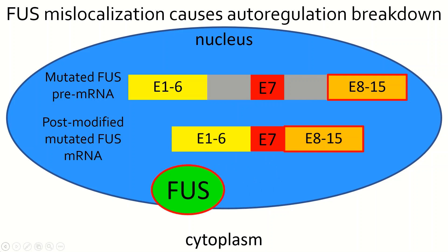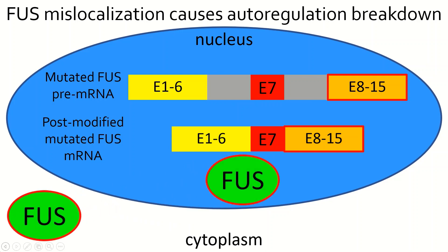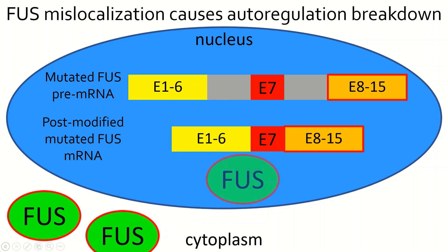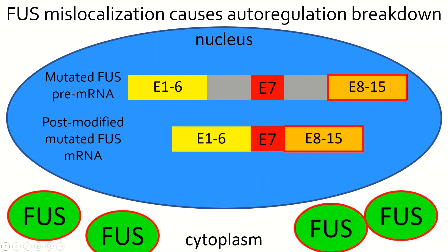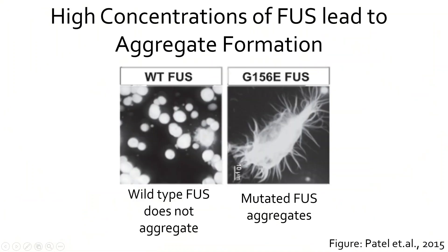Due to mislocalization of FUS mutants to the cytoplasm, the FUS autoregulatory pathway breaks down. Now when excess FUS is produced, FUS travels to the cytoplasm and is unavailable to bind to exon 7 in the nucleus. Exon 7 thus remains in the post-modified mRNA, allowing for mutated FUS to keep on being produced. Since the production of mutated FUS is not controlled, over time FUS begins to accumulate in the cytoplasm and form dangerous aggregates, as showcased by the picture on the right.